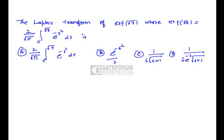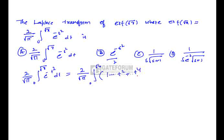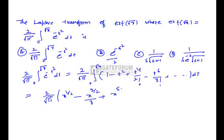We need to find the Laplace transform of erf(√x). The given function is (2/√π) ∫₀^√x e^(−t²) dt. Expanding e^(−t²) as a series: 1 − t² + t⁴/2! − t⁶/3! + ... and integrating, we get (2/√π) times [x^(1/2) − x^(3/2)/3 + x^(5/2)/(5·2!) − x^(7/2)/(7·3!) + ...].